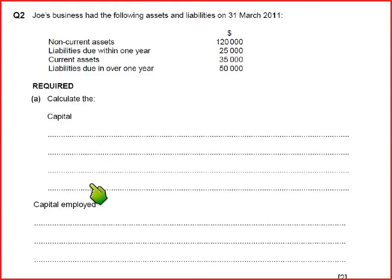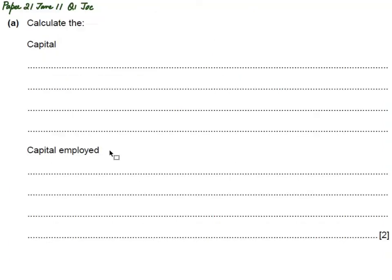We need to find capital — owners capital, also known as owners equity — and then capital employed. The formula for capital is the simple accounting equation: assets minus liabilities equals capital. Assets can be non-current or current, and liabilities can be non-current or current; both types are included in the calculation.